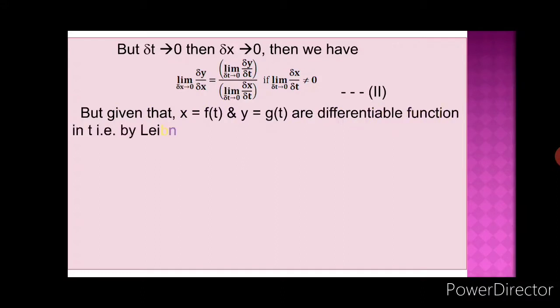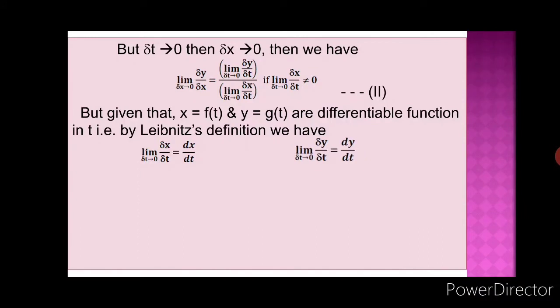Since x = f(t) and y = g(t) are differentiable functions of t, we know that dx/dt and dy/dt exist. By the Leibniz definition: limit as δt→0 of (δx/δt) = dx/dt, and limit as δt→0 of (δy/δt) = dy/dt. These two limits exist because of the given condition. We call them equations 3 and 4.